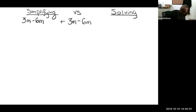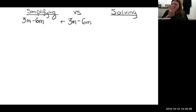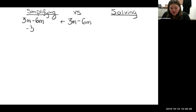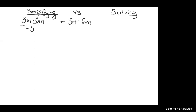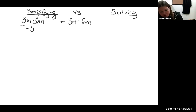Think of it like dollars. I had three dollars and spent six dollars — I'd go negative. I'd spend three, have no money, keep spending: negative one, negative two, negative three. So three M minus six M equals negative three M. You can type three minus six in your GED calculator, but you have to do the algebra yourself. If you're adding and subtracting M's, you still have M's — so I owe three M's. That's simplifying.